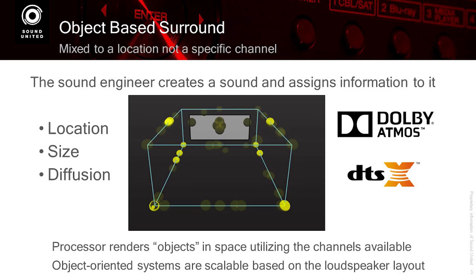But object-based material is completely different. With object-based surround, the surround engineer does not mix it to a channel. What he does is assign information to each audio object. First, location — where is it located in the space? Next, how big is that sound going to be — is it a small bell ringing or a thunderclap? Then, how loud is it, and how diffuse? Is it a focused object like the ring of a bell, or is it a large crowd being washed across the room or ocean waves? So: location, size, and how diffuse or focused the sound is.